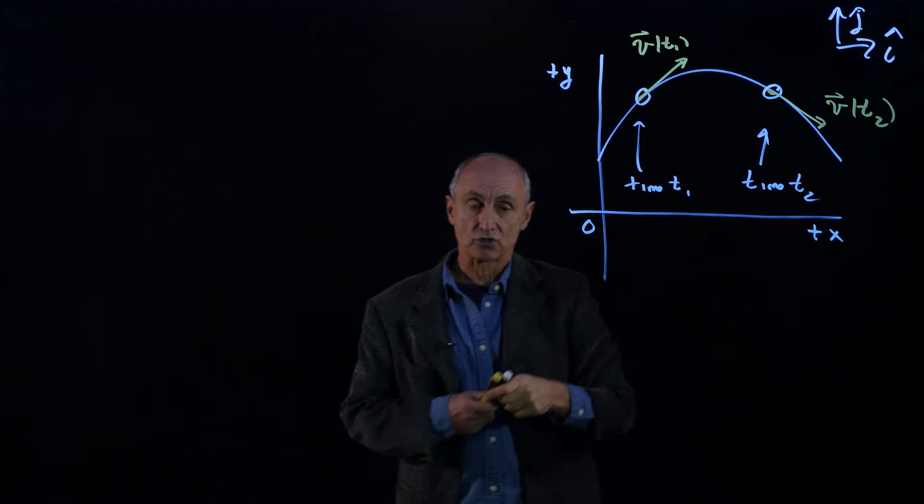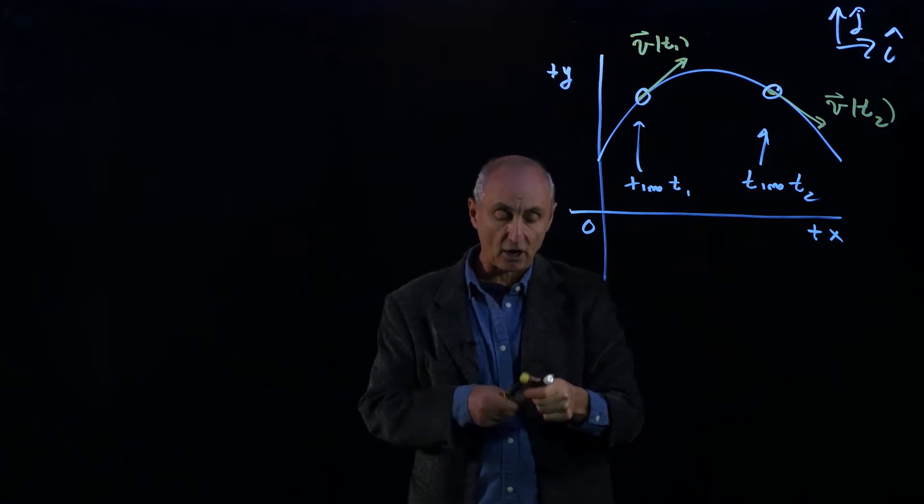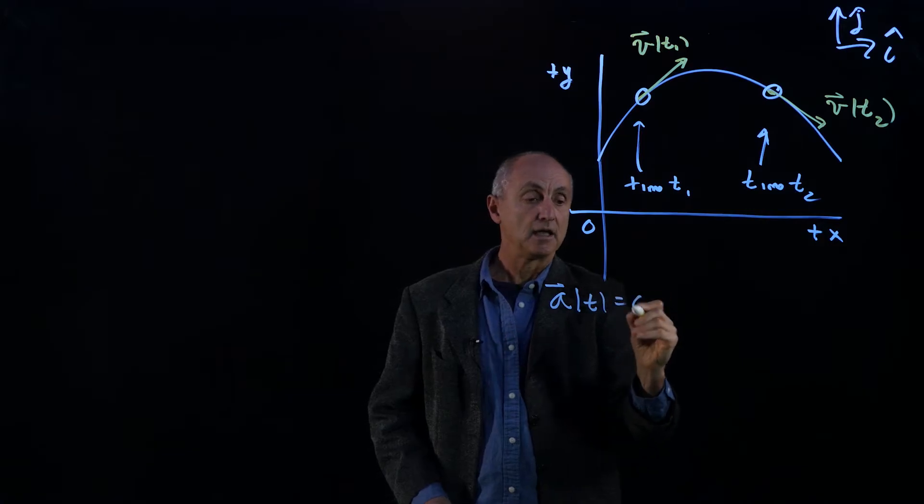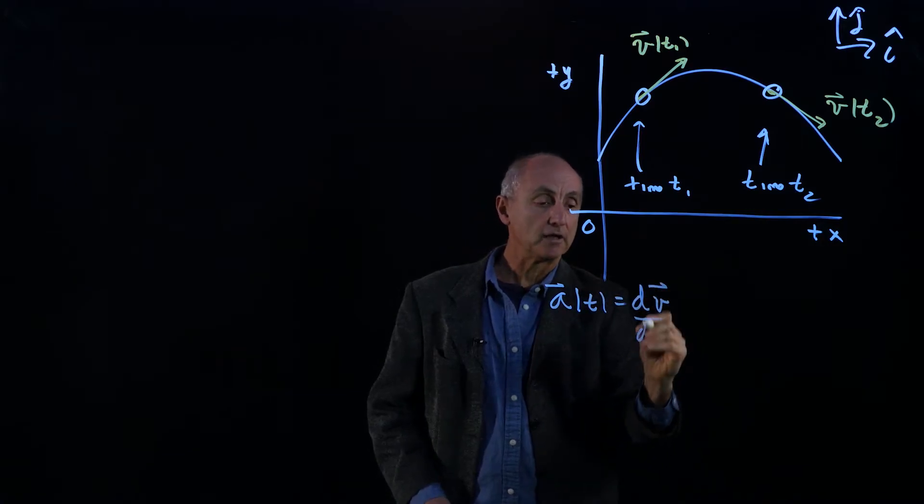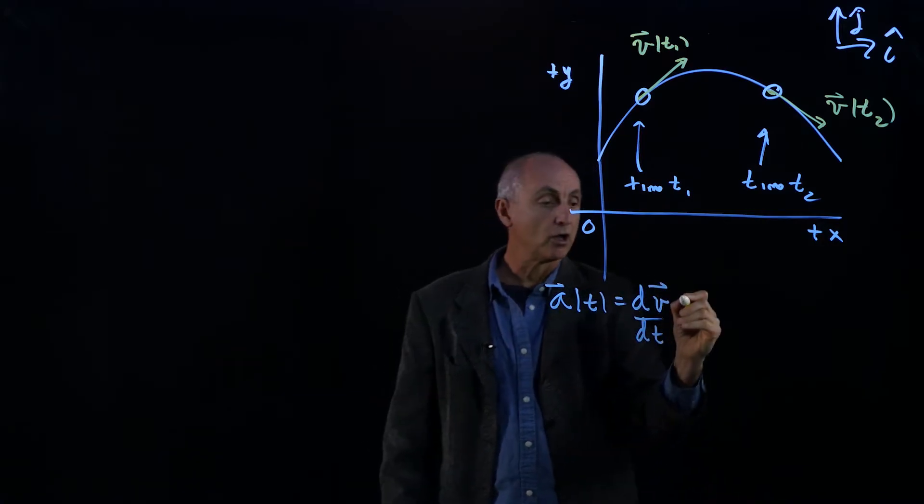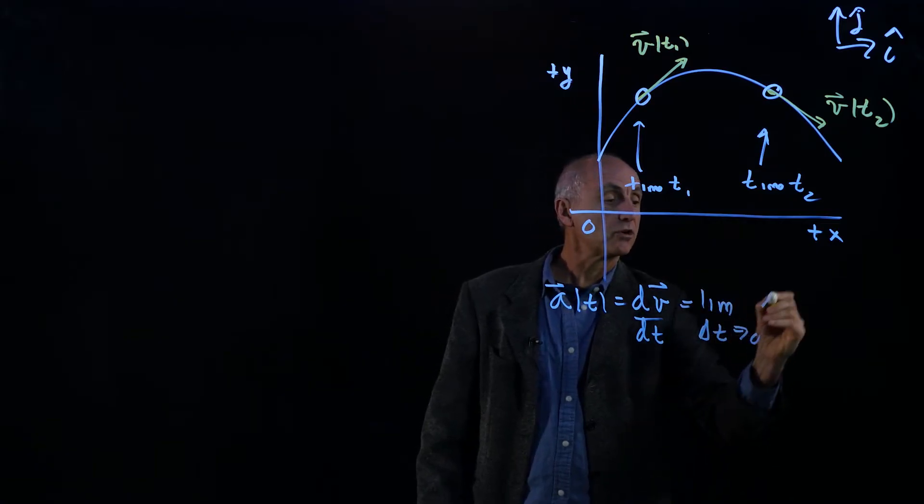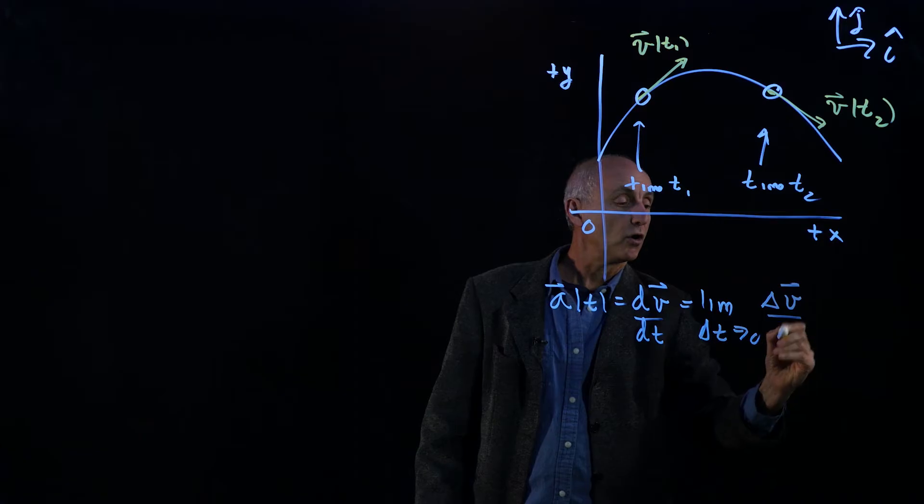And what we'd like to do now is describe, just as before, that our acceleration a of t is the derivative of the velocity as a function of time. What that means is the limit as delta t goes to zero of delta v over delta t.